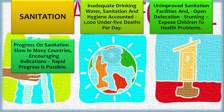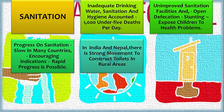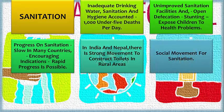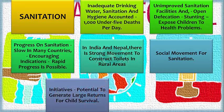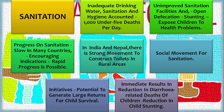Progress on sanitation has been slow, but there are encouraging signs. In countries like India and Nepal, a strong movement to construct toilets in rural areas has taken the form of a social movement for sanitation, mobilizing communities and civic authorities to create open-defecation-free districts. Such initiatives have the potential to generate large returns for child survival, with visible and immediate results in reducing diarrhea-related deaths among children under five and reducing child stunting.